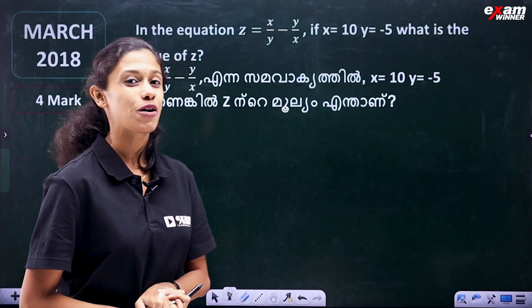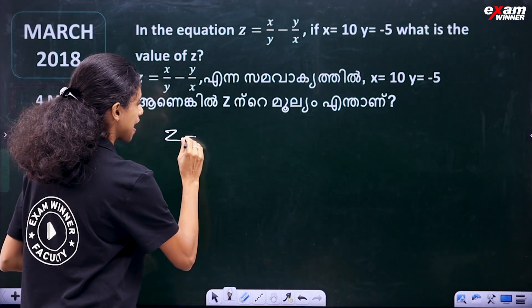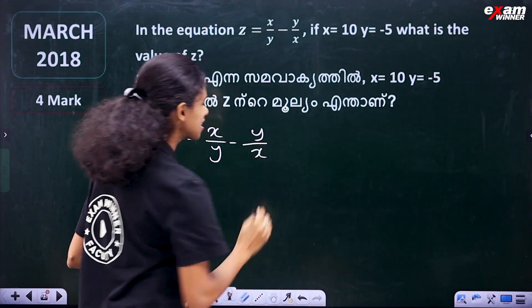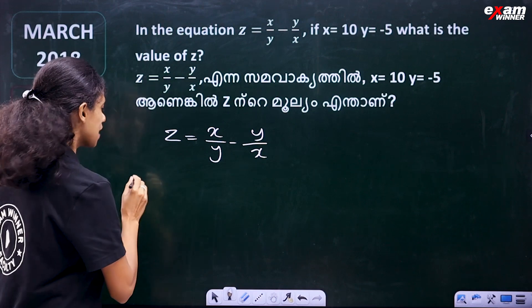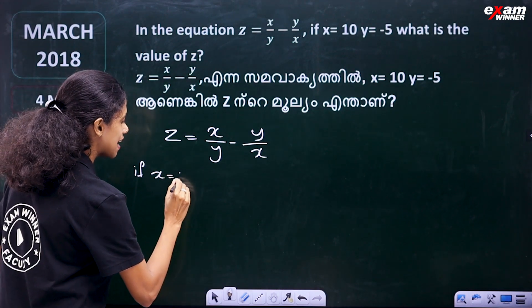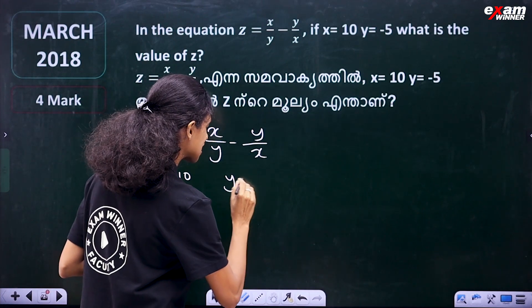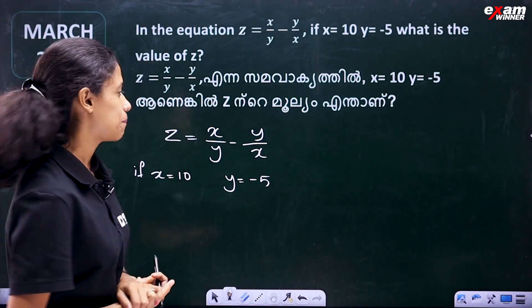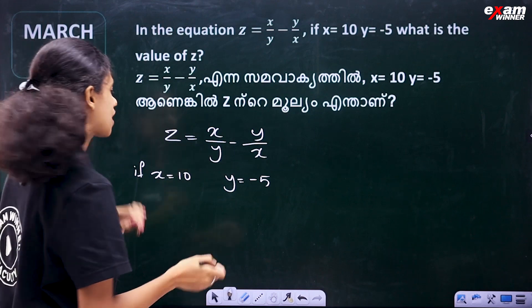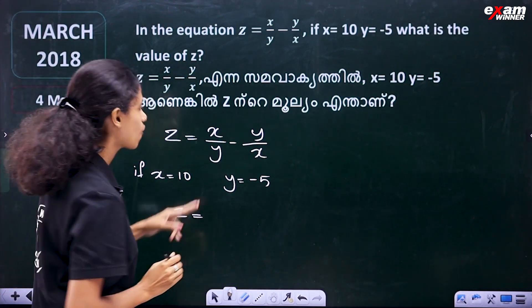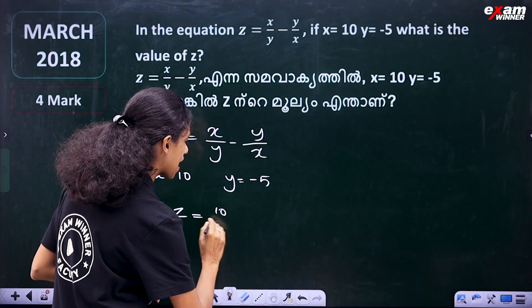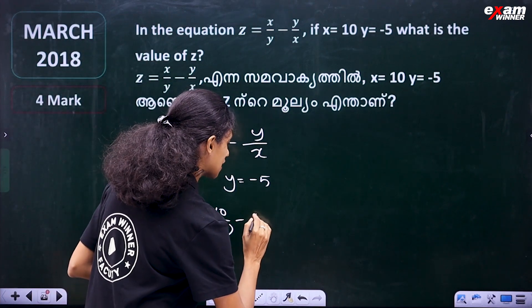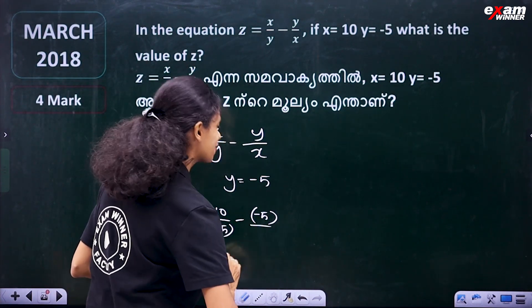How to solve this equation? The equation is: z = x/y minus y/x. If x is equal to 10, we substitute. So we get z = 10 divided by minus 5, minus minus 5 divided by 10.